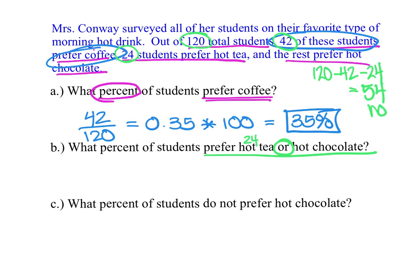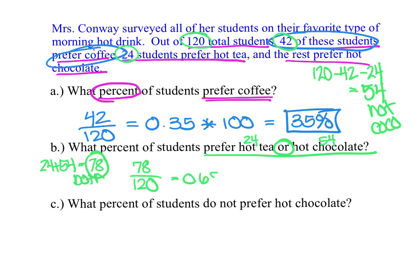So there are 54 students that like hot chocolate. Adding the 24 tea lovers and 54 hot chocolate students gives a total of 78 students. I write this as the fraction 78 over 120, then take 78 divided by 120 to get the decimal 0.65, and multiply by 100 to get 65%.